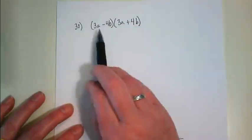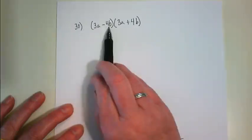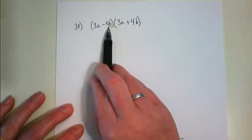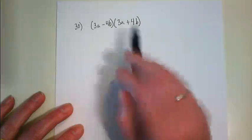So what we have going on here, Elliot, is this is a binomial, but it's also a factor, and this factor is being multiplied by this factor.